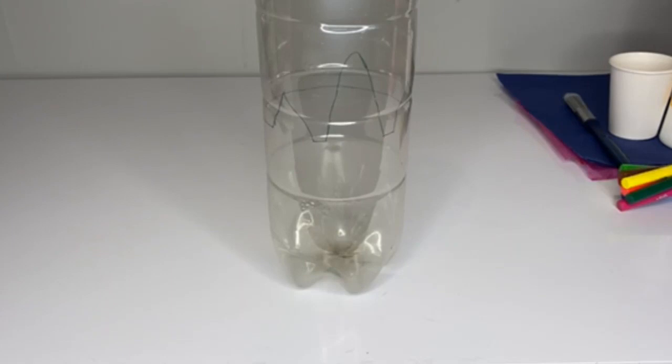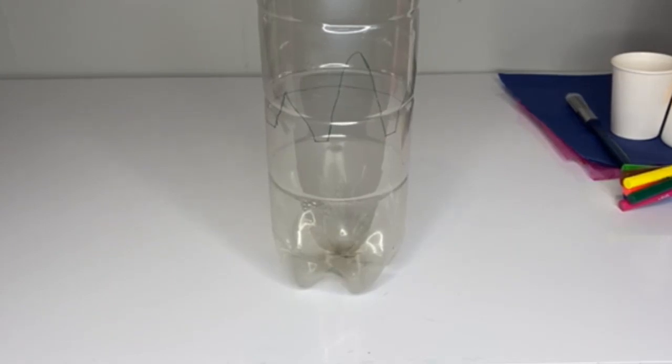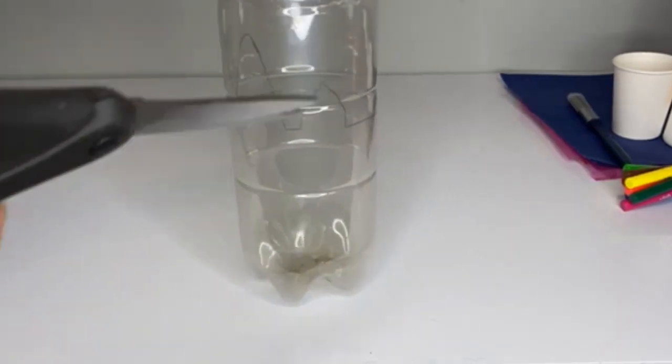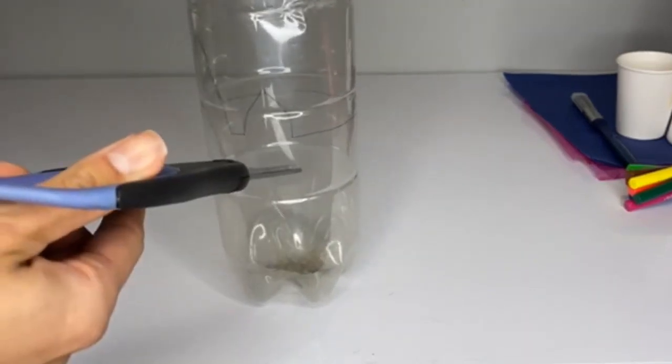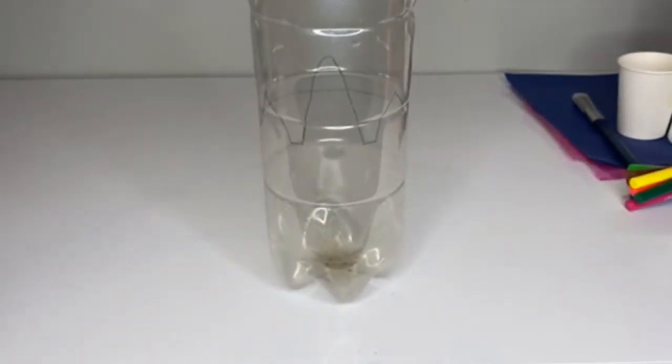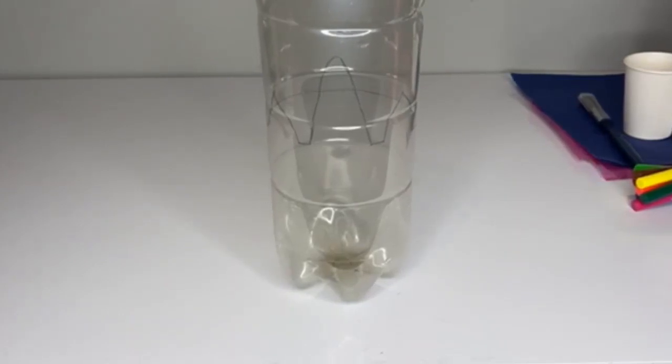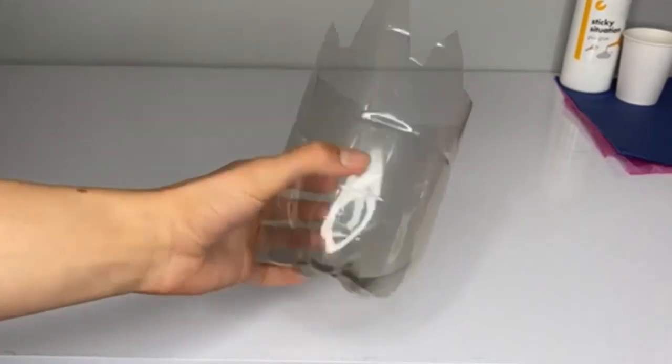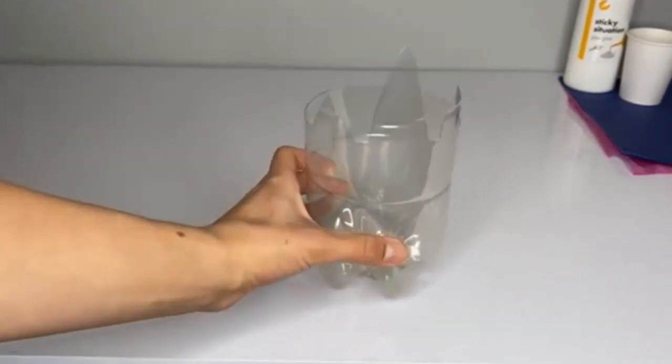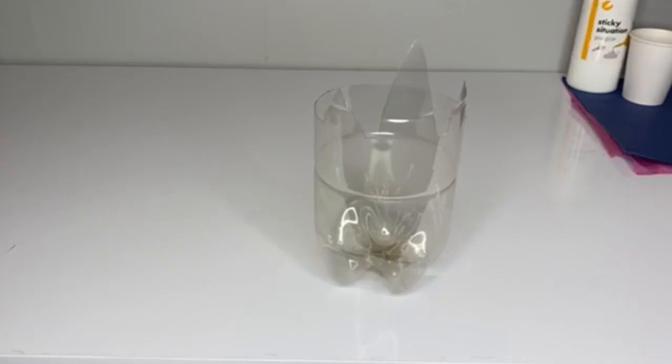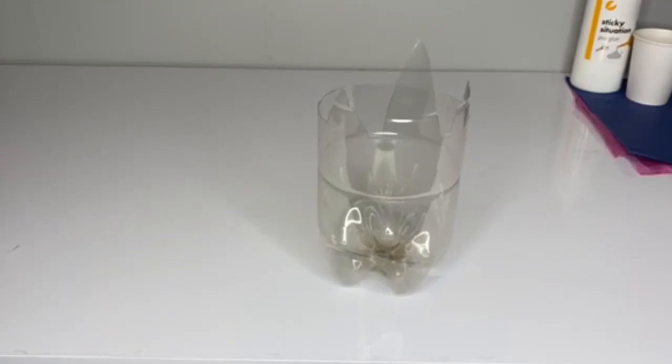You will then need to cut this out. This step can be quite tricky so you may need an adult to help you. The easiest way to do this is to pierce a hole in the bottle away from the outline of the character that you have drawn, then cut around the circumference of the bottle until it is in two pieces. This will make it easier to cut around your outline. You should now have something that looks like this. Yours may look slightly different to mine depending on which character you decided to create.